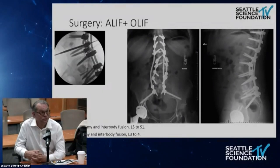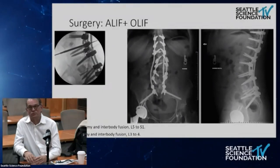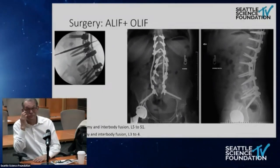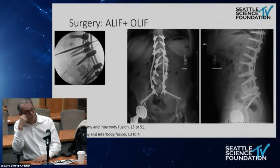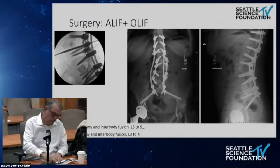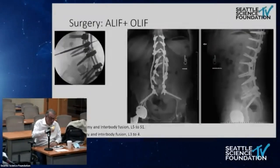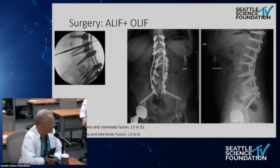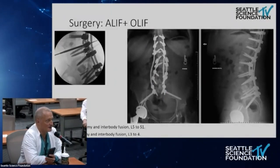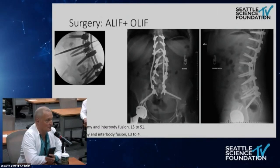Stage two included an L5-S1 ALIF and L3-4 OLIF. Chapman asks about the four-rod construct philosophy — noting the satellite rods over the osteotomy site span roughly L1 to L5. Why not take them down to the pelvis?